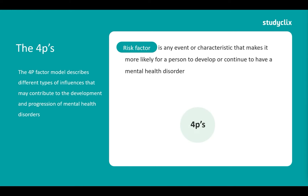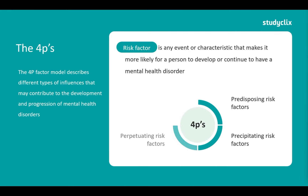Now we're going to move on to the four P's. We're going to start off with predisposing risk factors, then we have precipitating risk factors, perpetuating, and then we have protective factors.